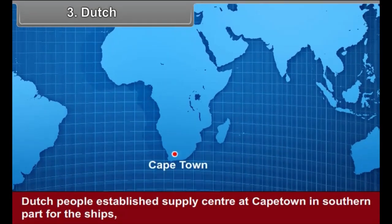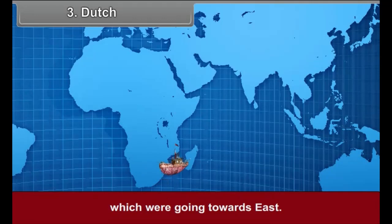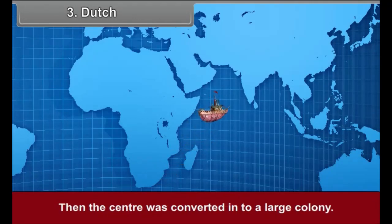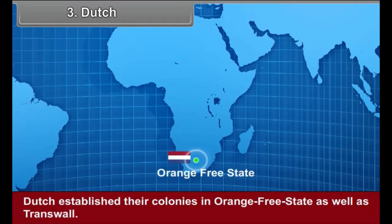Third, the Dutch: Dutch people established a supply center at Cape Town in the southern part for ships going towards the east. Then the center was converted into a large colony. Dutch also established their colonies in the Orange Free State as well as Transvaal.